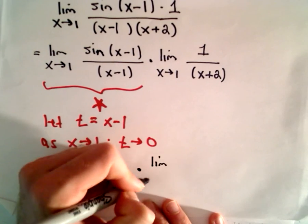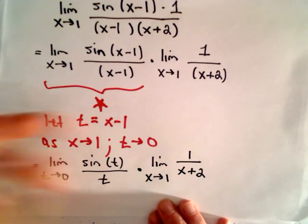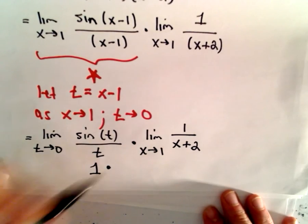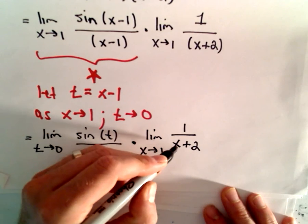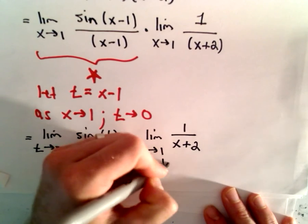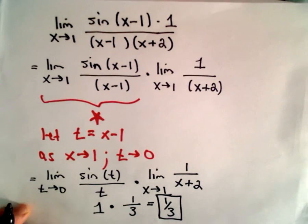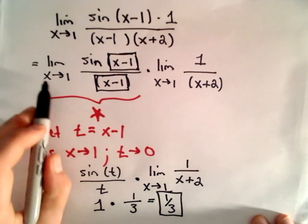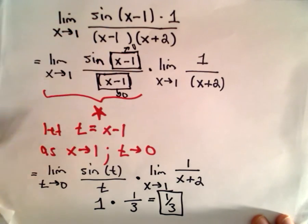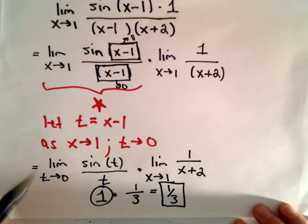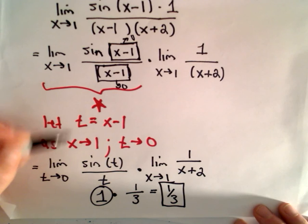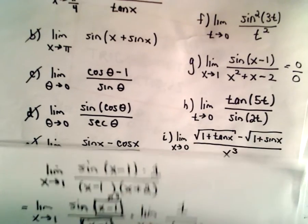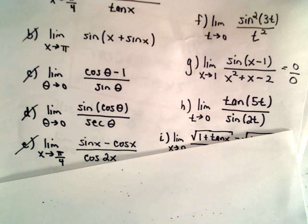We've seen that this limit is exactly equal to 1. For the second part, we can just plug in and evaluate: the limit as x approaches 1 of 1 over x plus 2 gives us 1 over 1 plus 2, which is 1 third. So 1 third is our solution. The key is recognizing we have the exact same thing in the numerator and denominator, both approaching 0. On a test, ask your teacher whether they want to see the relabeling step — if not, as long as you recognize it, just do it.